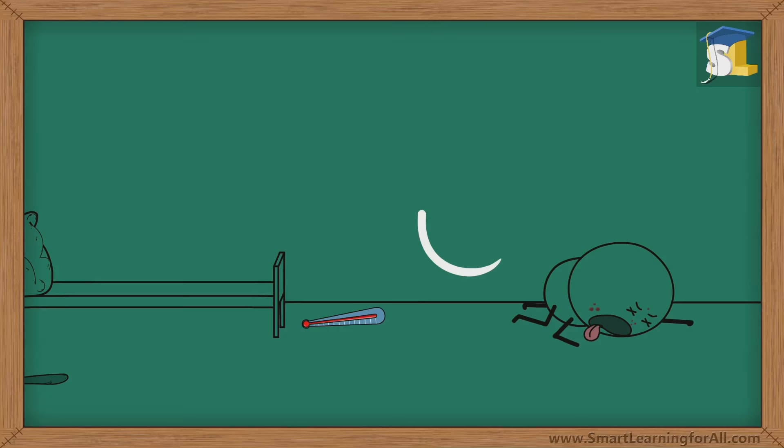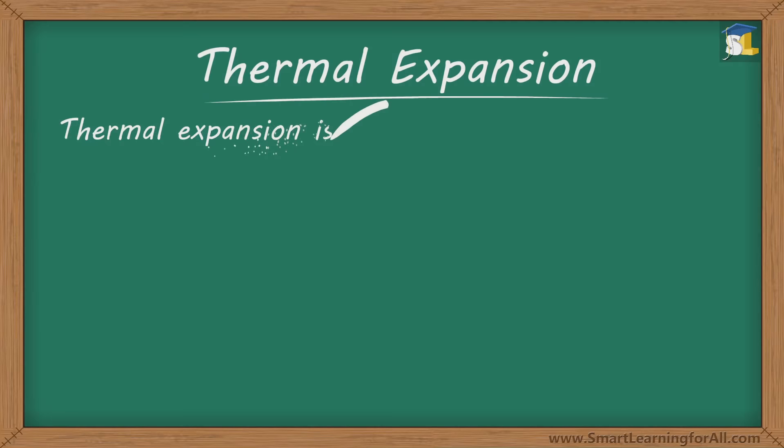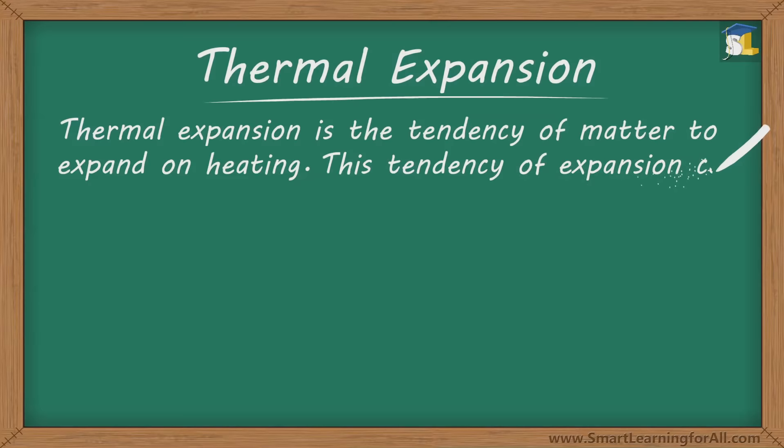Hey, did you notice that the level of mercury in the thermometer rose when it was placed in hot water? You must be wondering why this happened, right? It happened because of thermal expansion. Thermal expansion is the tendency of matter to expand on heating. This tendency of expansion can be observed in solids, liquids, as well as gases.